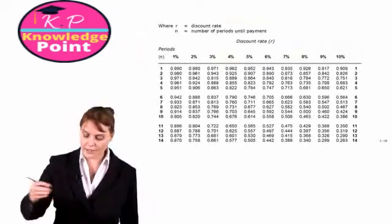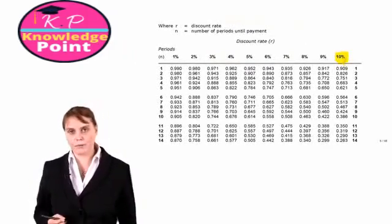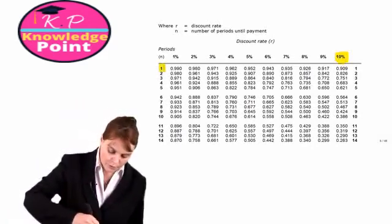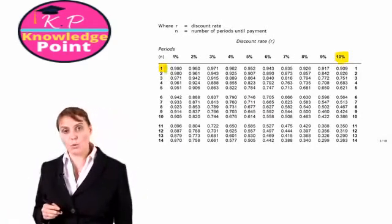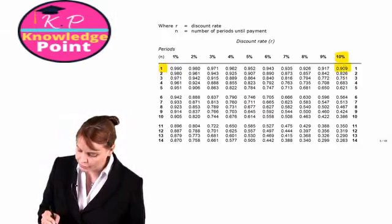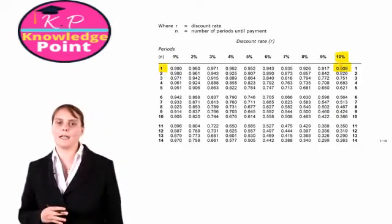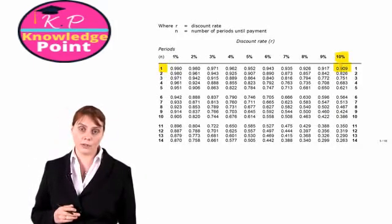So if we look at our present value tables and cross-reference, our discount rate is 10%, the number of time periods is 1. So the discount factor for one year at 10% is 0.909.